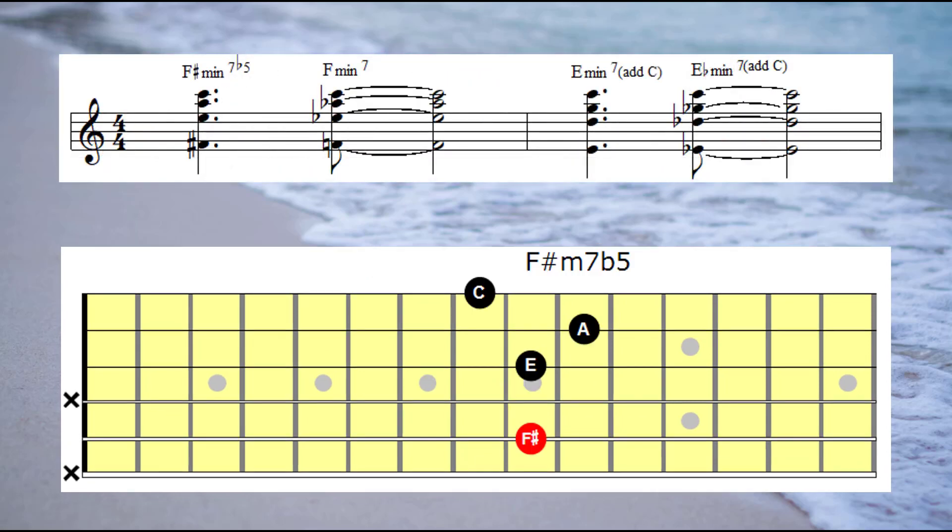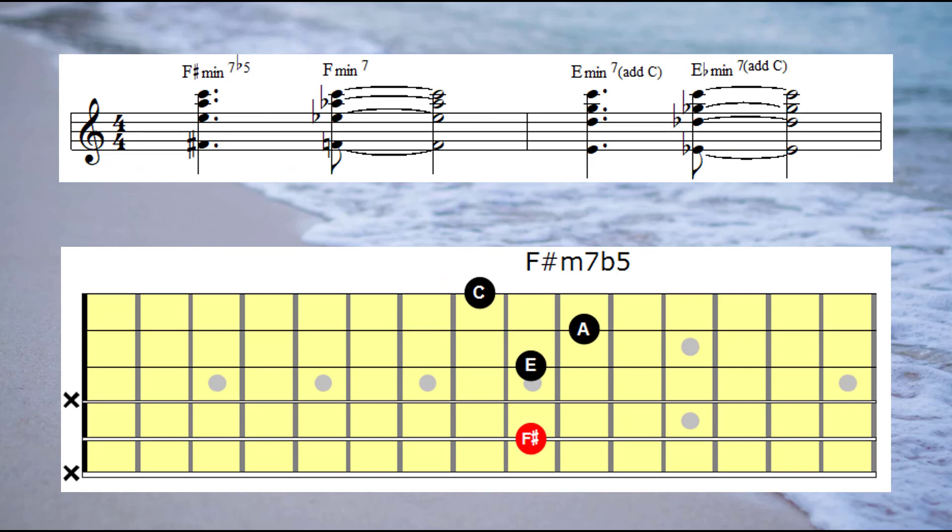And now here's an example of an ending. So this time the constant melody note is C on the top of each chord.